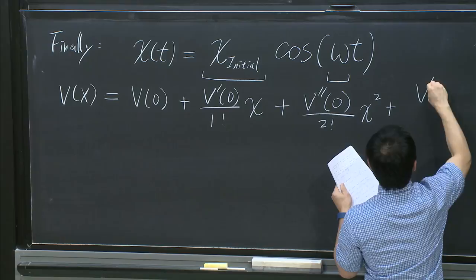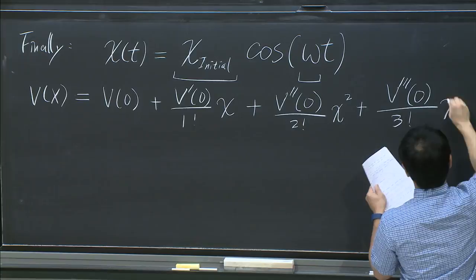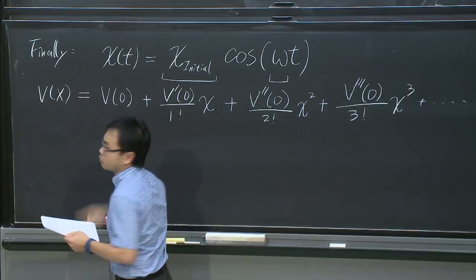Vectorial x squared plus 3 triple prime 0 divided by 3, vectorial x to the third, plus infinite number of terms. And the V0 is the position of where you have minima.